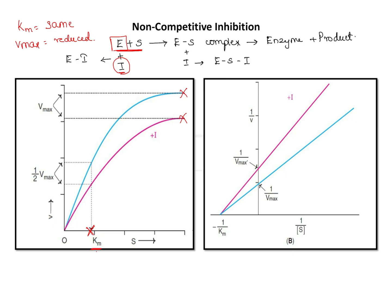In non-competitive inhibition, the affinity of the enzyme to the substrate is unaffected, whereas Vmax is decreased. On a Lineweaver-Burk plot, the x-intercept remains the same while there is a change in the y-intercept, showing the reduced Vmax. Therefore, the two slopes meet at a common point on the x-axis but differ on the y-axis. This is the graphical representation of non-competitive inhibition.